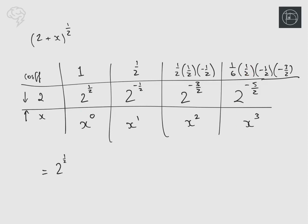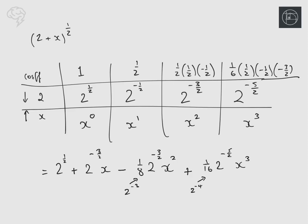That gives us: 2^(1/2), then plus 2^(−1/2) x, then minus one-eighth times 2^(−3/2) times x², and then plus one-sixteenth times 2^(−5/2) x³. Since one-eighth is 2^(−3) and one-sixteenth is 2^(−4), we can write these in index notation: the x² term has 2^(−9/2) and the x³ term has 2^(−4) times 2^(−5/2) which is 2^(−13/2) x³.